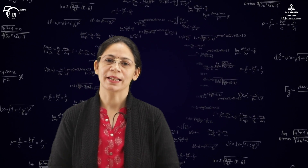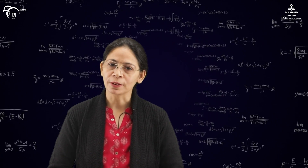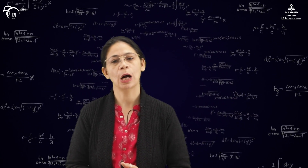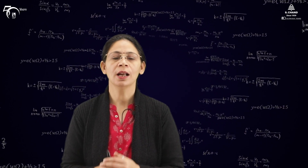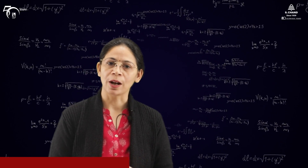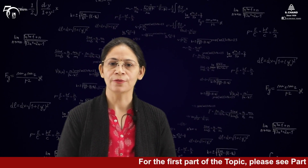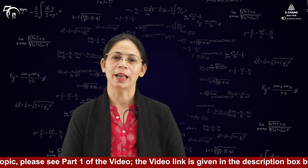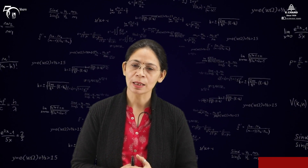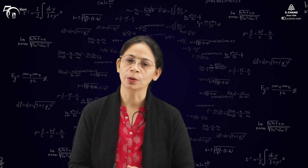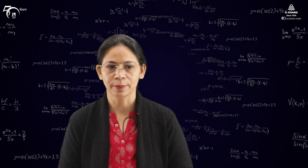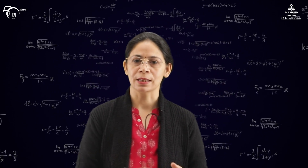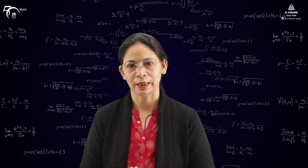Welcome back to the second part of the video. In the first part, we learned how to write down a triple integral, how to evaluate a triple integral, and how to find out the values of the limits for each variable with respect to which we would like to integrate. In this part, we will study orthogonal curvilinear coordinates, which is a continuation of triple integrals.